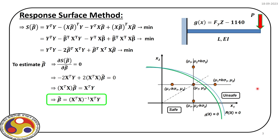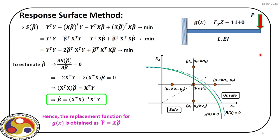The main idea is to develop sufficient support points to uniquely solve the unknown coefficient beta-hat — do not confuse this with the reliability index beta; this is the unknown coefficient in the response surface. There are different support point generation schemes. If we have exactly the same number of support points as unknowns, we have a unique solution; if we have more points we must go for regression.